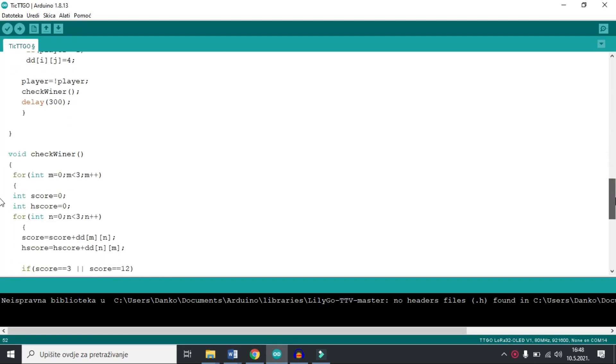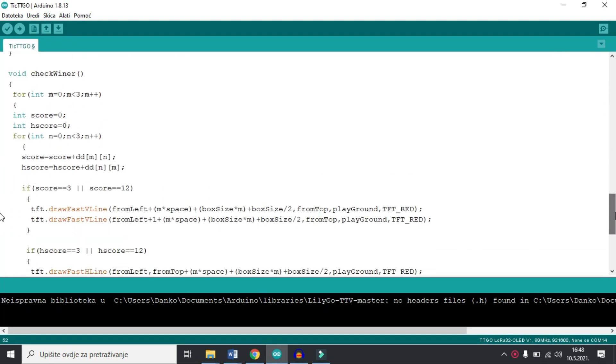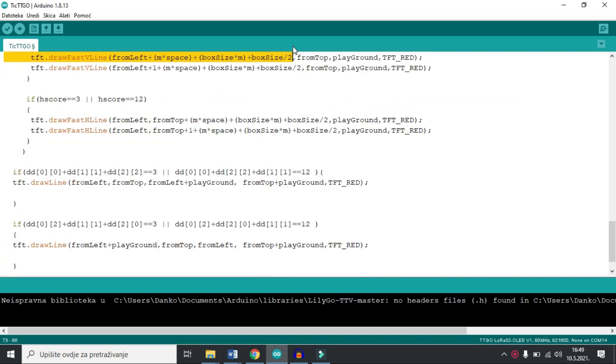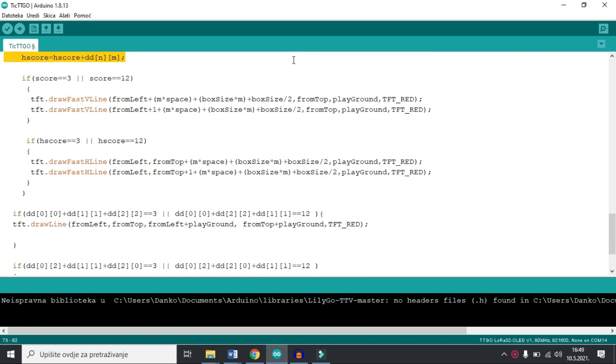The last part of the code is the hardest. This function is checking if we have a winner on the board. If we have a winner, it will draw a red line and connect three identifiers. It's a little hard to explain, but I will try.